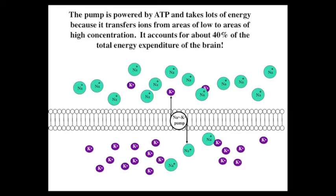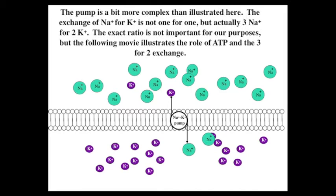The pump is powered by ATP and takes lots of energy because it transfers ions from areas of low to areas of high concentration. Indeed, it accounts for about 40% of the total energy expenditure of the brain.